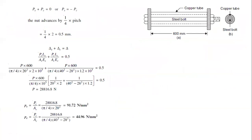There are a few key notes to take in this problem. First, after tightening the bolt assembly, we should say the system is in equilibrium condition. That means the system is in a resting, balanced condition.